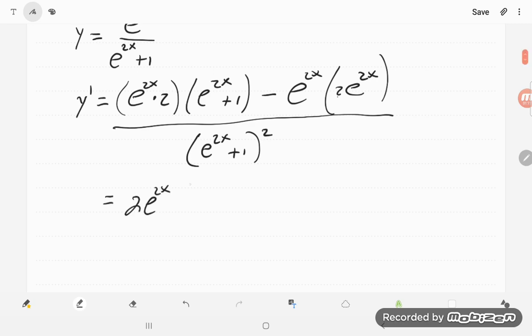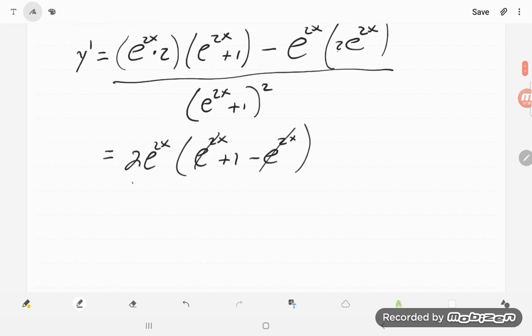which just leaves e to the 2x plus 1 and then minus e to the 2x. So those two will cancel nicely, and divided by the thing on the bottom here, e to the 2x plus 1 squared.